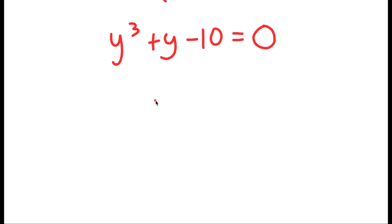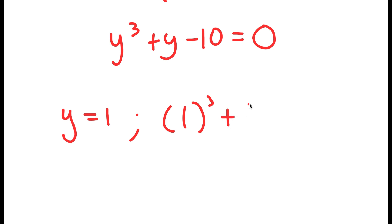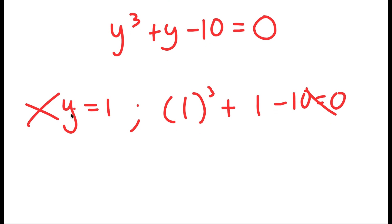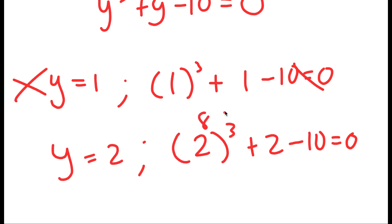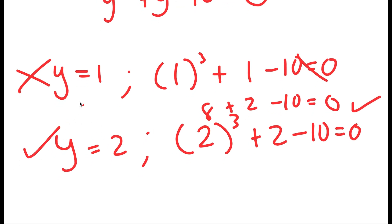Now I need to find one solution of y first, and then I can find the remaining solutions. I'm going to test values of y, starting with y equals 1. When y equals 1, I have 1 cubed plus 1 minus 10, which is 2 minus 10, which is negative 8 — does not equal 0. So I'm going to try y equals 2. When y equals 2, I get 2 cubed plus 2 minus 10, which is 8 plus 2 minus 10, which equals 0. So y equals 2 is a solution.